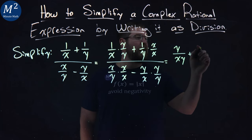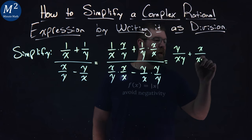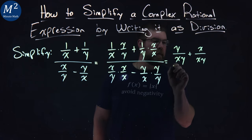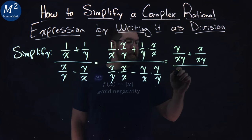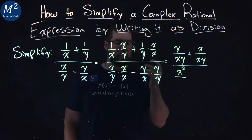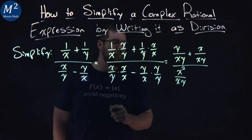Plus, 1 times x is an x. y times x is a, well, xy to keep it uniform here. Same thing down here. x times x is an x squared. Over y times x. Let's keep it xy so we're just all in the same order. x comes first.